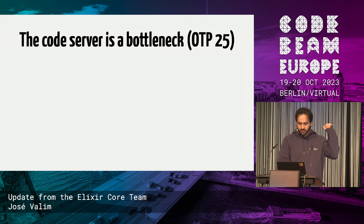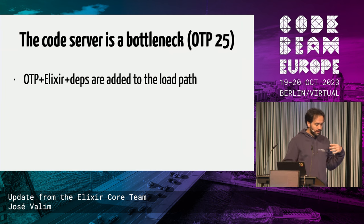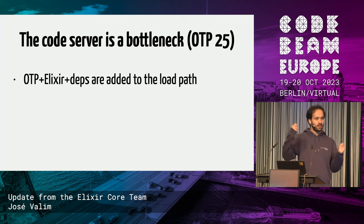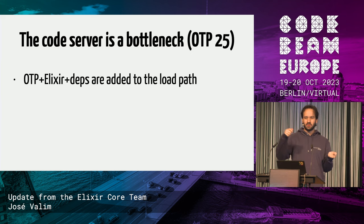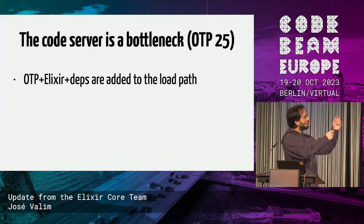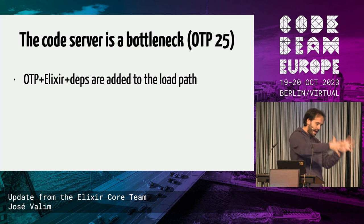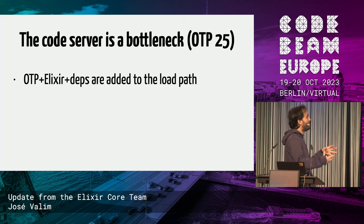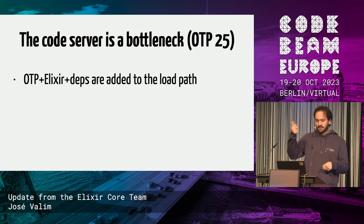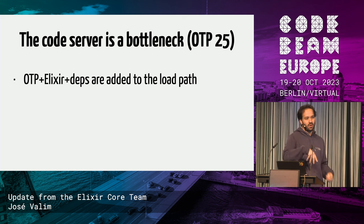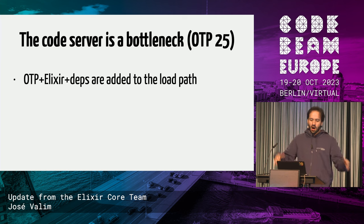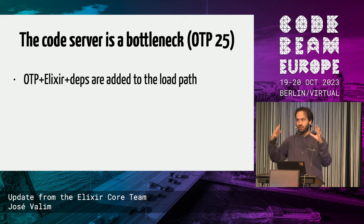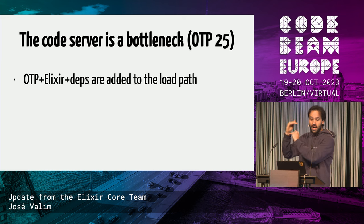In OTP 25, every time you start your project, it adds all the OTP applications to the load path. Erlang OTP's standard library comes with about 30 to 35 applications, Elixir has six, plus all your project dependencies. If you have 40 dependencies, you end up with around 80 load path entries that you need to traverse to find a module.